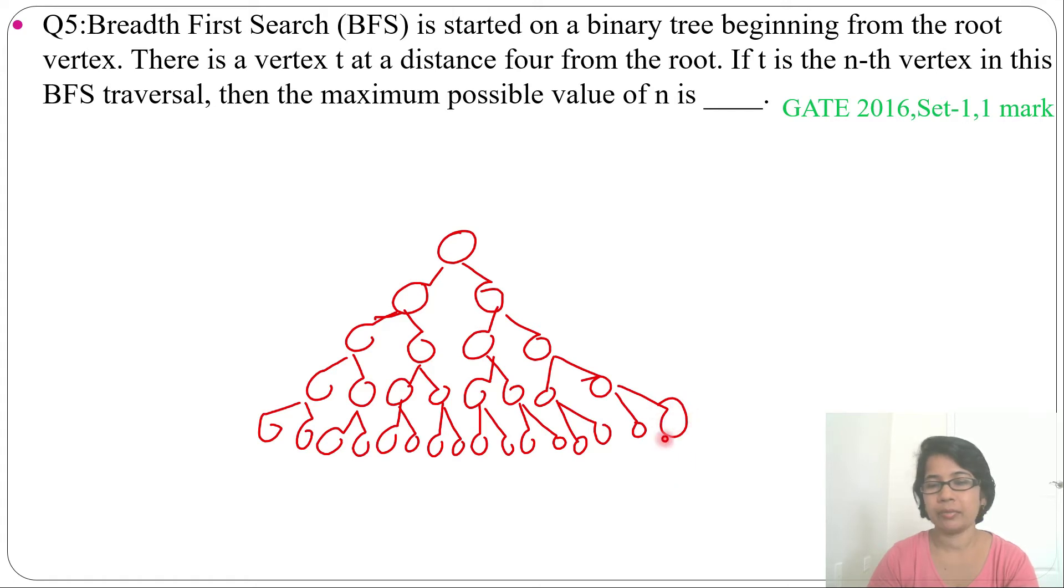It is asking if it will do the BFS, then when this node will come. You already know if a tree is given then BFS is level order. So it will go level wise like first will be root, then this 2 nodes, then this 4 nodes, then this 8 nodes, then this 16 nodes. So it will be level order.